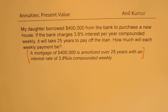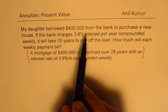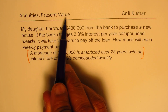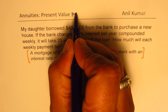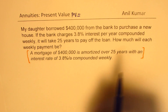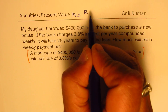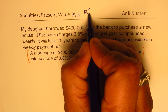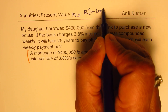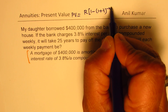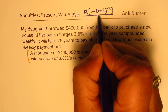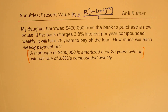When you have something like a mortgage with an amortized period, you follow the same method as we are going to do in this video. We have a case of present value. The present value formula is: PV equals R times [1 minus (1 plus I) to the power of minus N] divided by I.